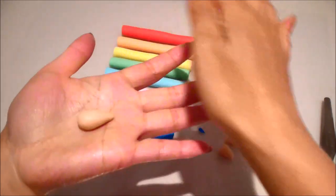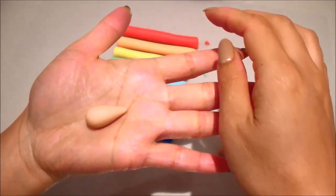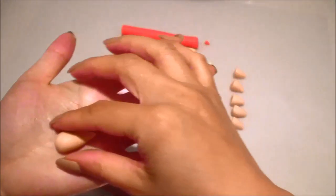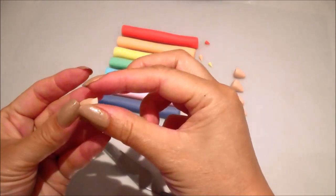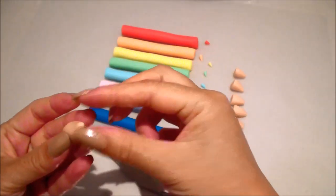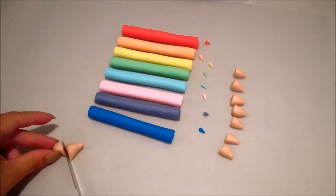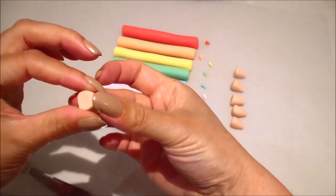Now balling up some lightly colored brown fondant and then again just tapering in one end to make it pointy. Cutting the tip off and then just rounding it up, and then cutting the other end off.